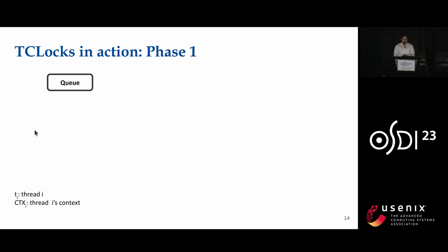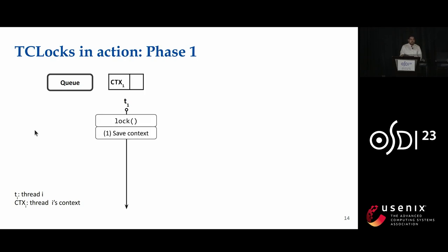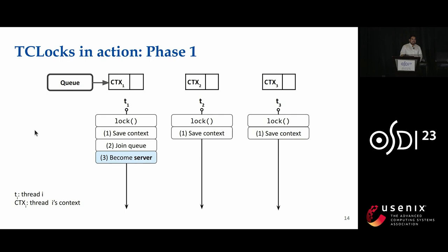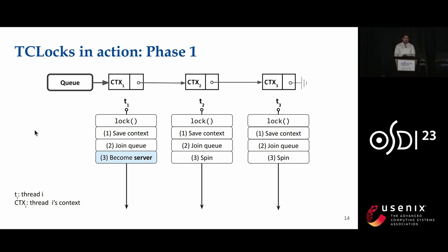Now let's look at how TCLock works. There is a queue associated with each lock, and a thread that wants to acquire the lock joins the queue. The first thread calls the lock function, saves its context on the queue node, then joins the queue. Being the head of the queue, this thread becomes the server. Two other threads also try to acquire the lock — they call the lock API, save their contexts on their queue nodes, and join the queue. Since these two threads are not at the head of the queue, they spin while waiting to get the response from the server.